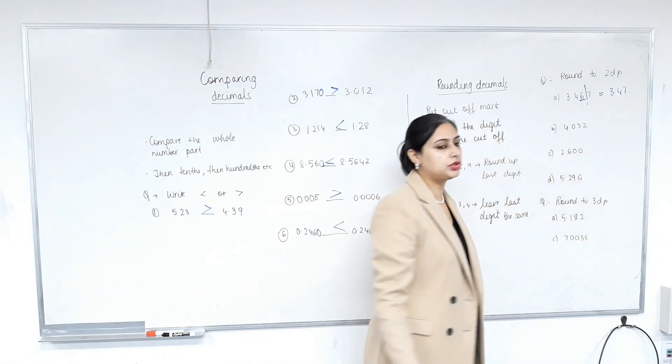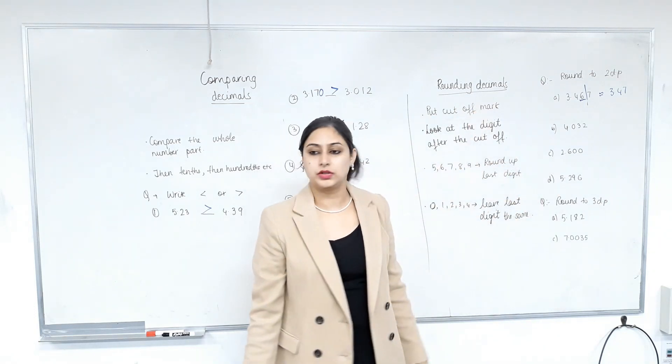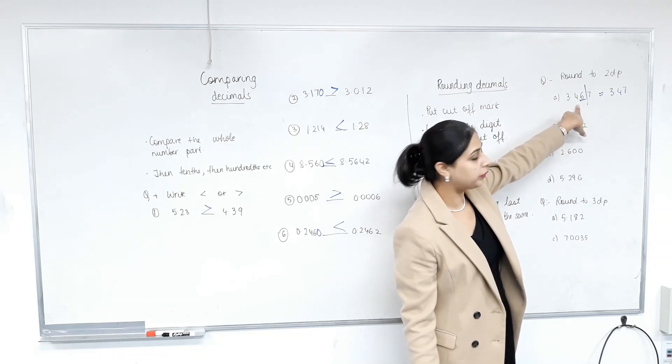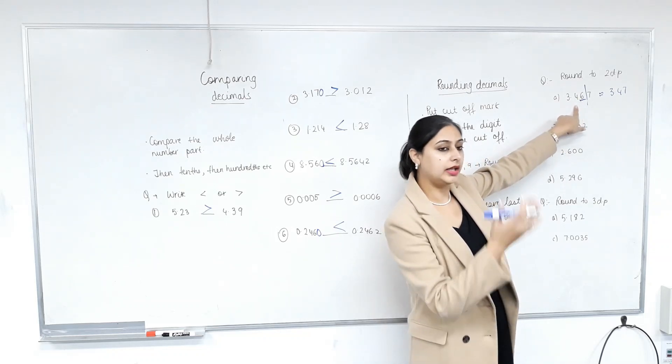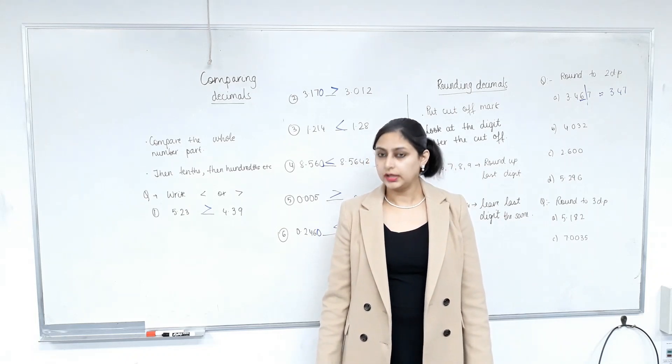You put approximately equal. That's what I use. I don't like putting equal sign between two numbers that aren't equal. This is an approximation of that. So basically, three point four six seven is closer to three point four seven on a number line than three point four six. That's what rounding is. Make sense?